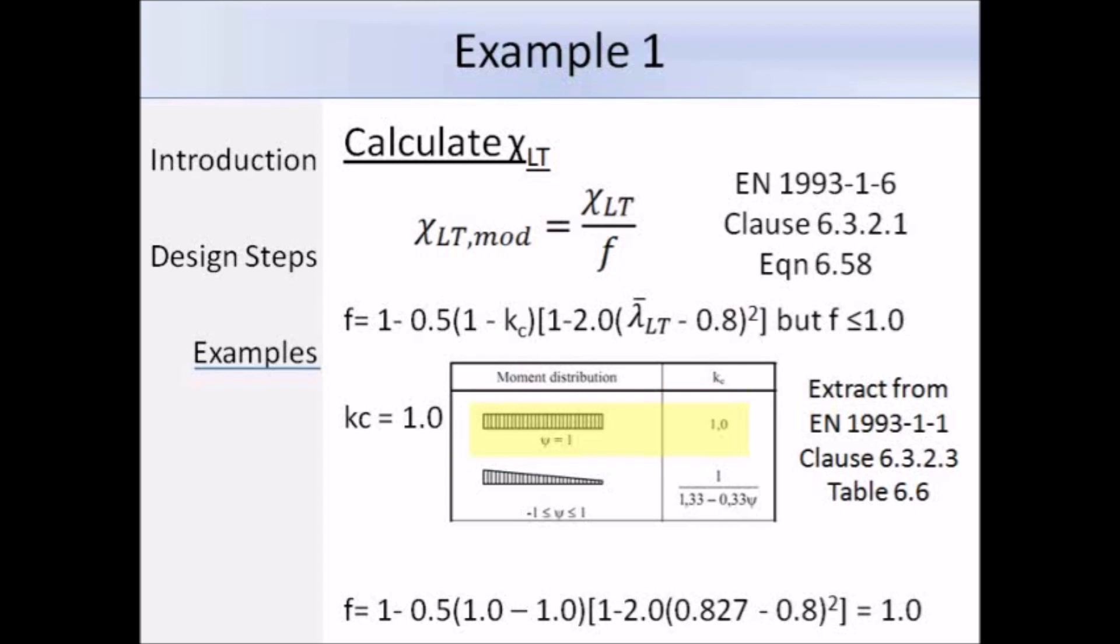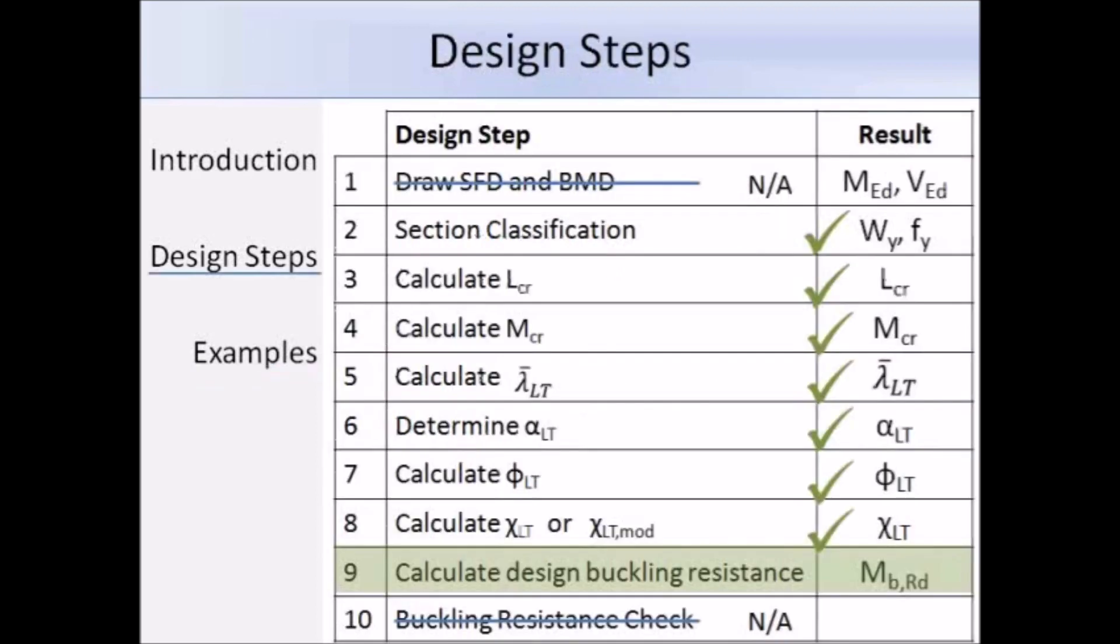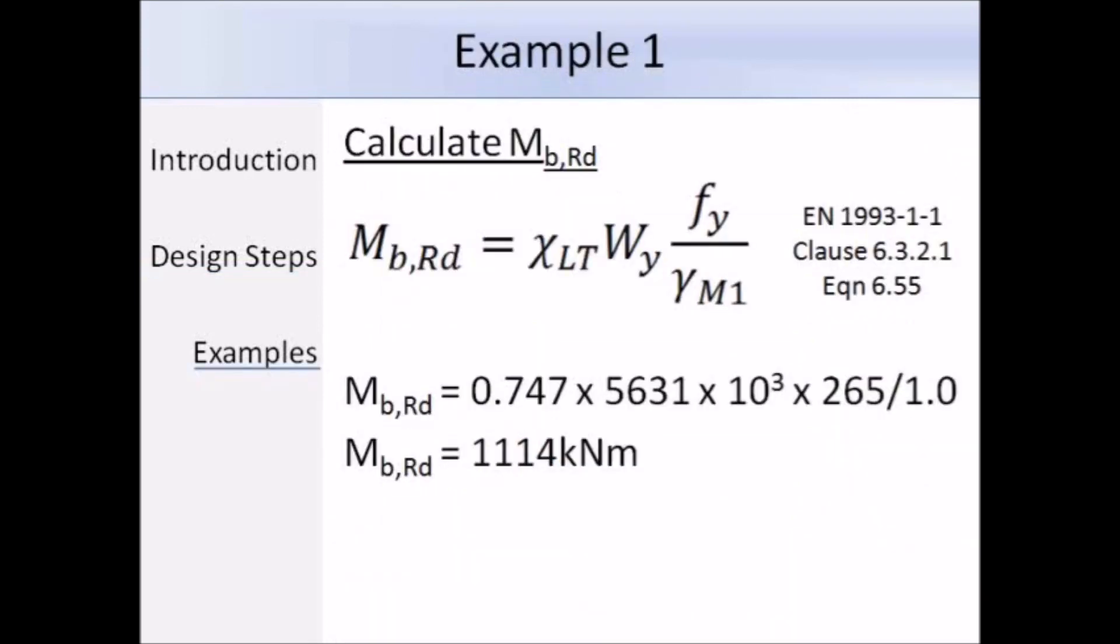So as I said, f is equal to 1, so chi LT mod would be the same as chi LT, so it's 0.747. So we're nearly at the end of this example, and the last thing we need to do is to work out the design buckling resistance. So here is expression 6.55. We have the reduction factor chi LT of 0.747, and the section modulus, and we know that we're using the plastic section modulus because our section is class 1. The yield strength is determined as 265 N/mm² from the product standards, and the partial factor gamma M1 equals 1. Putting in those values, Mb,Rd works out as 1114 kNm.